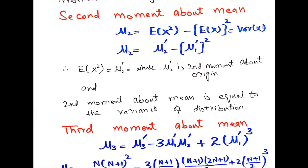So when you prove the variance of any distribution, it means you can prove the second moment about the mean. The proof of variance of X can be found at the end screen — when this video ends, you can find the link of variance of X.